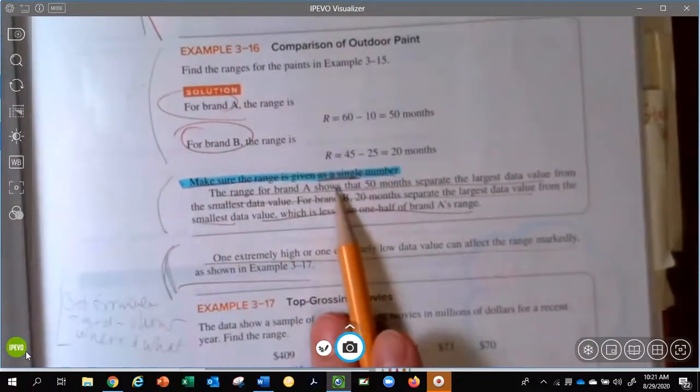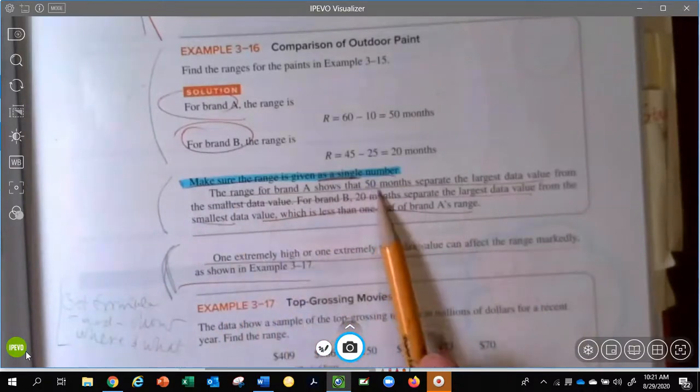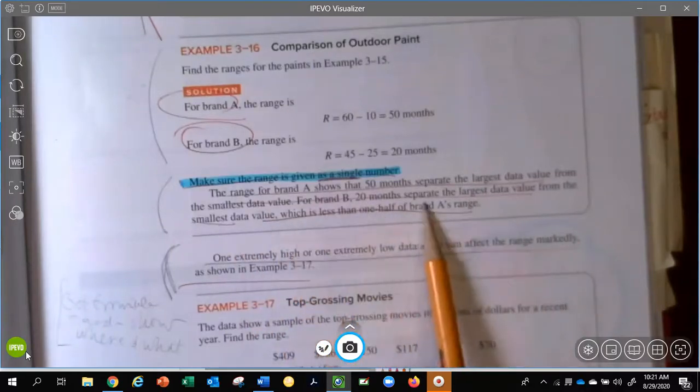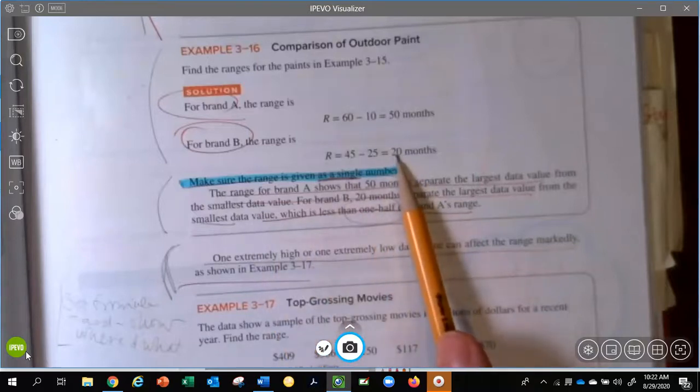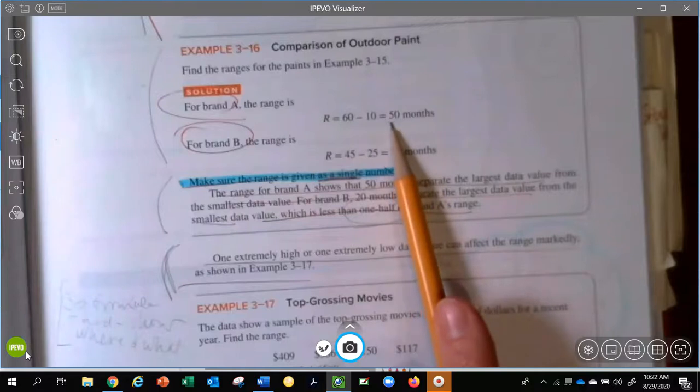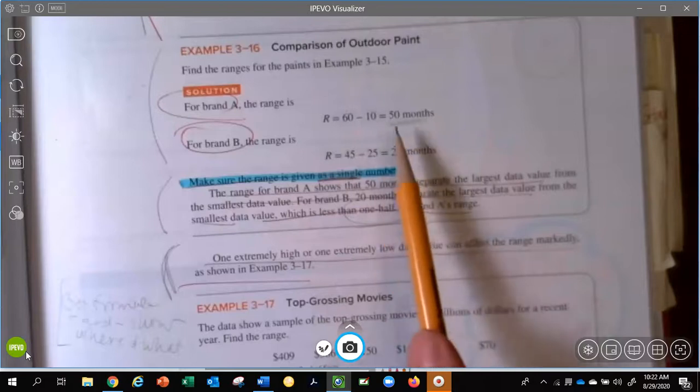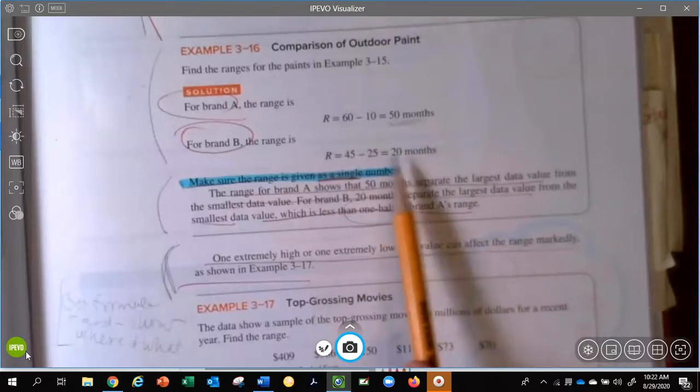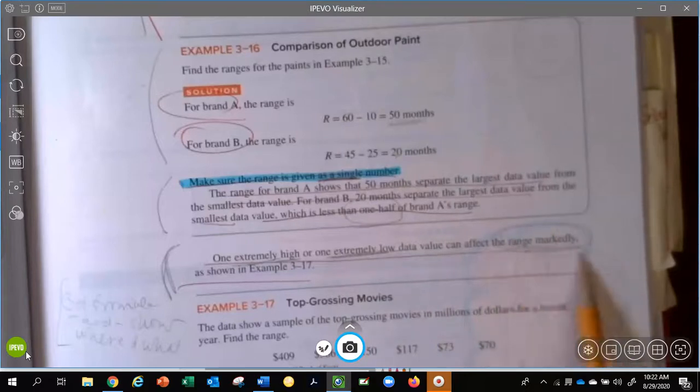If we look at brand B, lowest number, highest number, you subtract those two like they did here and you get a range of 20 months. It says, make sure it is given as a single number. I would put that on my index card and then it explains the one range was 50 months, the other was 20. And then be able to make some kind of statement about it. And I always like these that say they're twice or half.